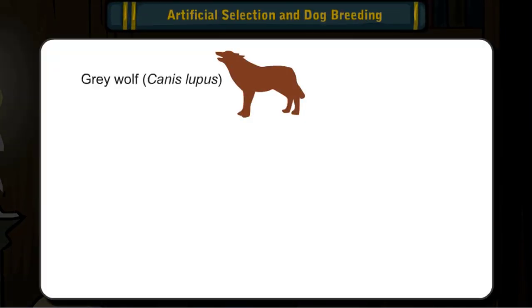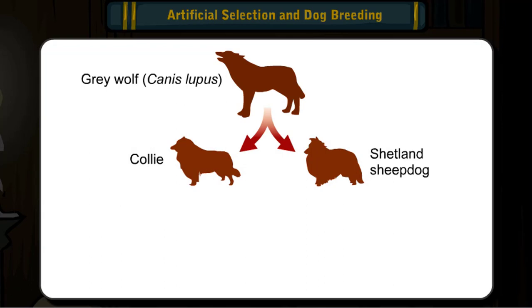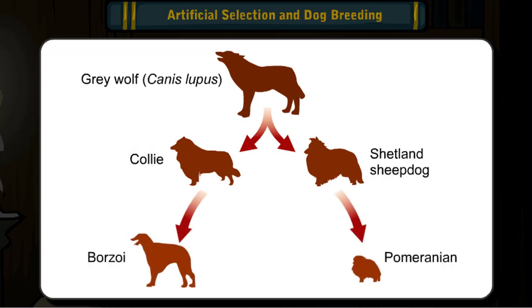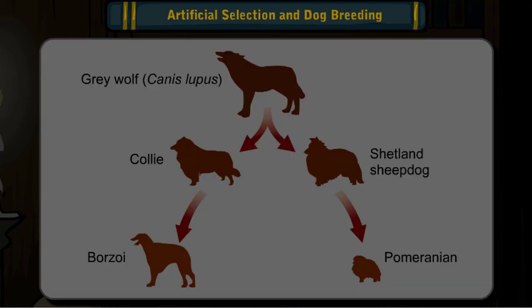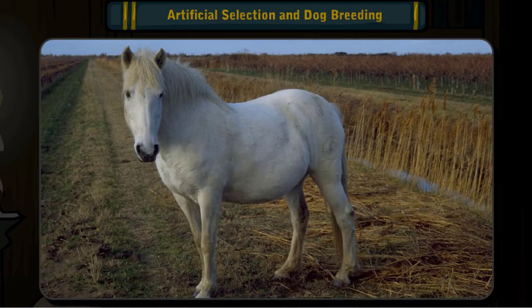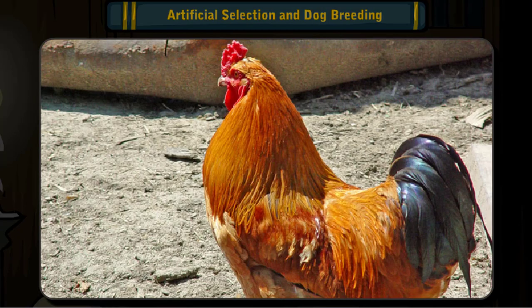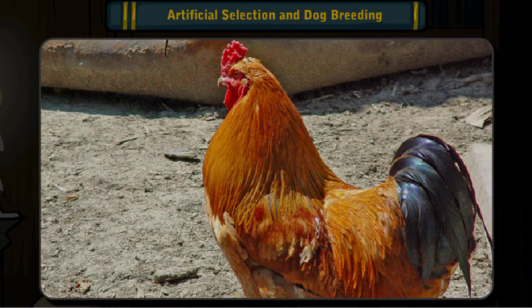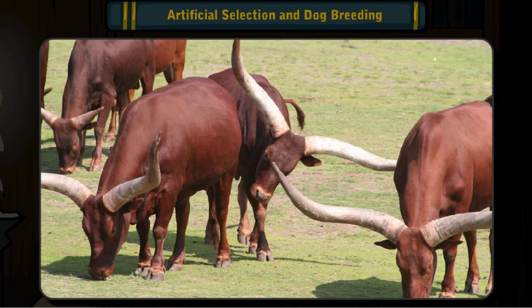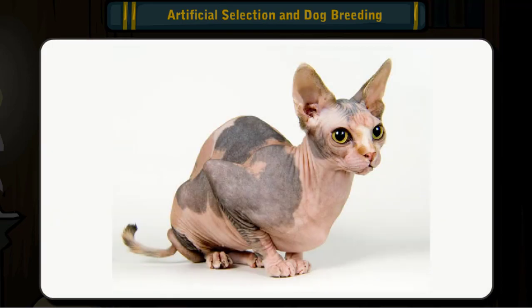Darwin was already familiar with artificial selection, the concept of organisms changing over time as humans allow certain organisms with desired traits to produce offspring. This gives rise to different breeds of dogs, horses, and various livestock. This suggested to Darwin that characteristics can be passed from parent to offspring, and that a population can change over time based on its characteristics.